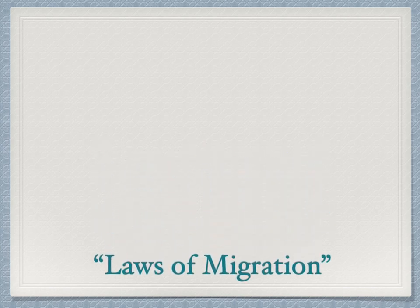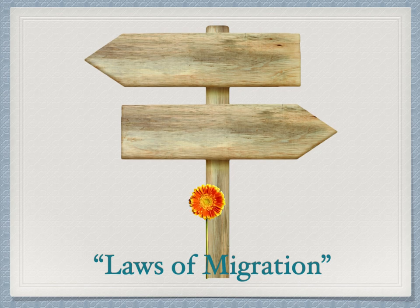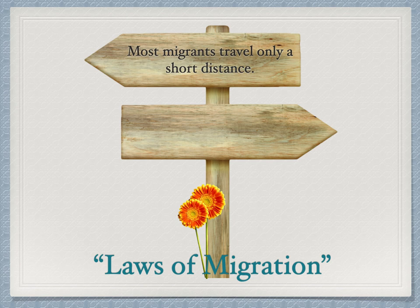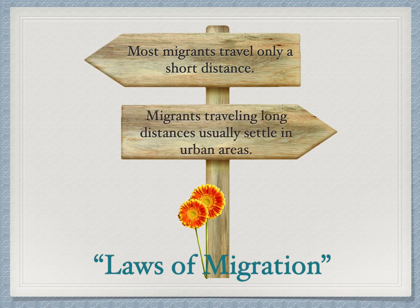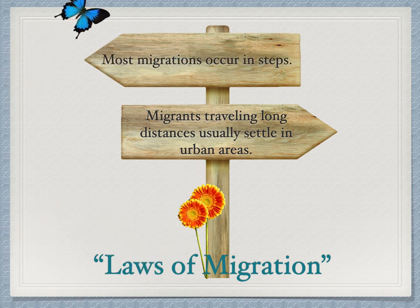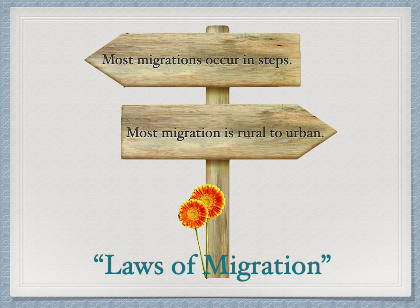The laws of migration describe general patterns. Most migrants only travel a short distance — the most common migrations are short ones. Migrants traveling long distances usually settle in urban areas rather than rural ones. And most migrations occur in steps — people tend to make a move, then a later move, then perhaps another, rather than one large permanent relocation. The biggest overall pattern is rural to urban migration.